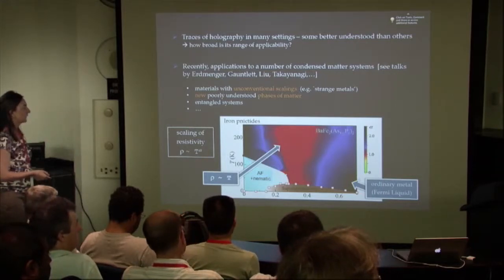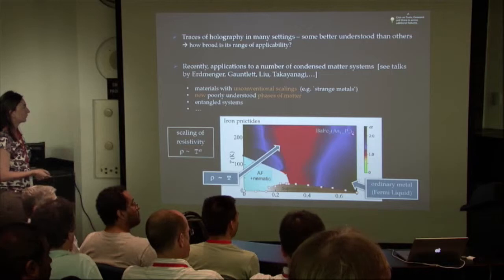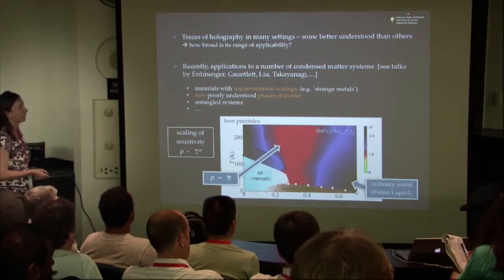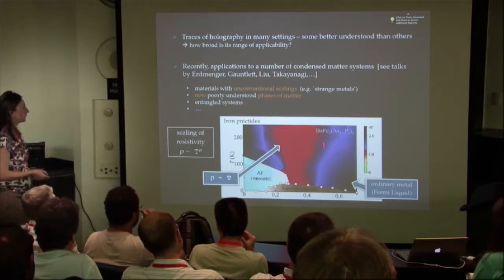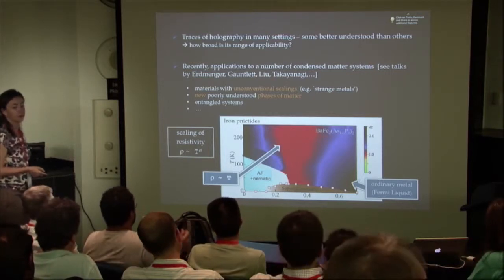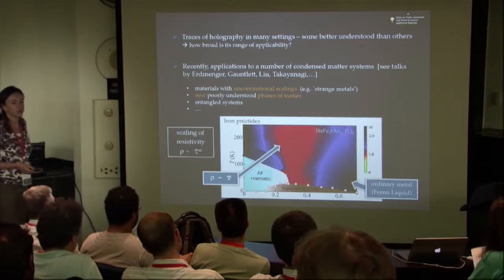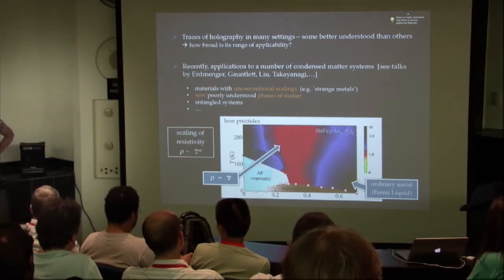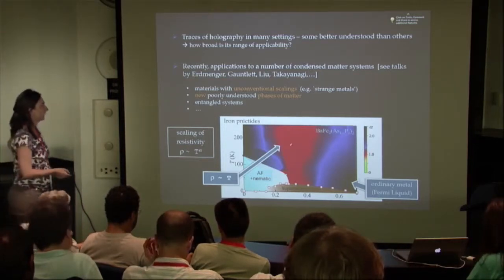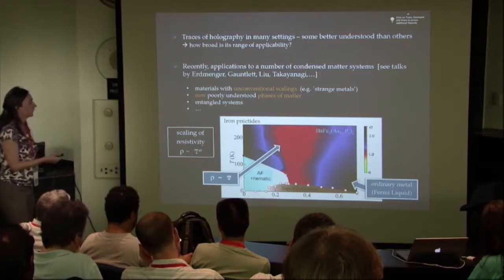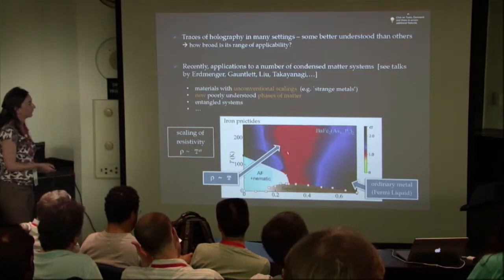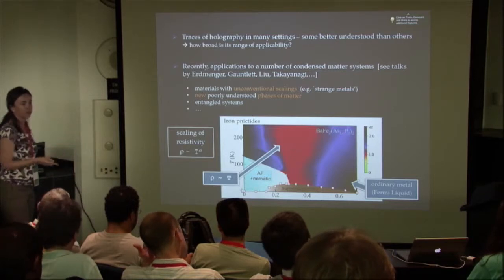This is a plot of resistivity as a function of temperature. The y-axis is temperature, the horizontal axis is the amount of doping. There's a region down here and up here where the resistivity behaves as you would expect from conventional metal. Down here, the scaling is T squared. But notice this intermediate region where the scaling is very different - it's linear in temperature. That's one example of anomalous scaling. This is called strange metal.